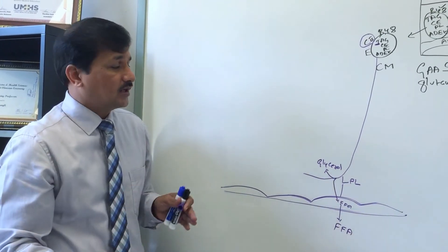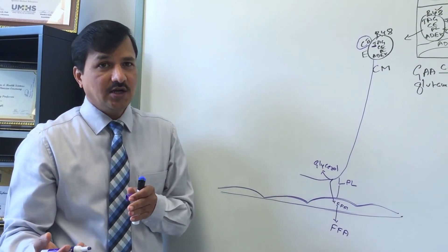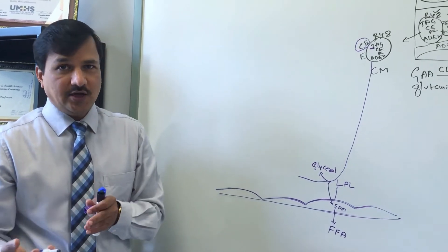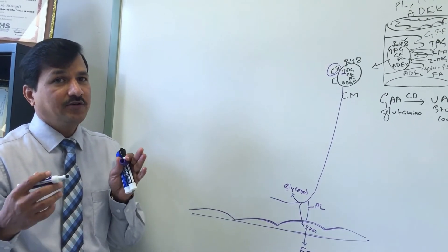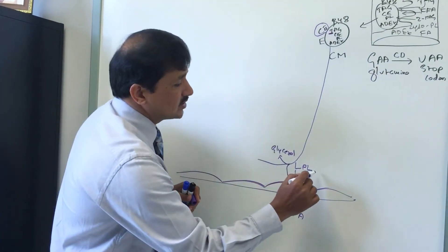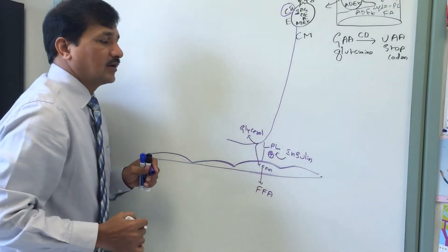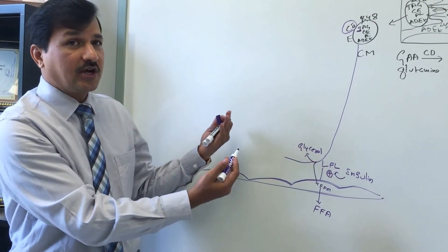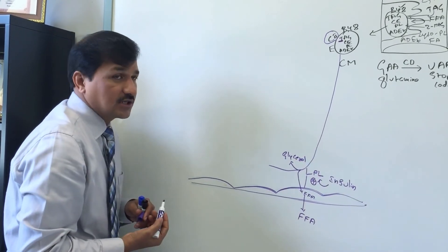The released glycerol travels back to the liver, where it is converted to glycerol-3-phosphate. Glycerol-3-phosphate can be used for triacylglycerol synthesis, or it can be converted to dihydroxyacetone phosphate (DHAP) and enter glycolysis. This chylomicron metabolism occurs in the well-fed state, and insulin stimulates LPL expression, thereby increasing chylomicron metabolism.